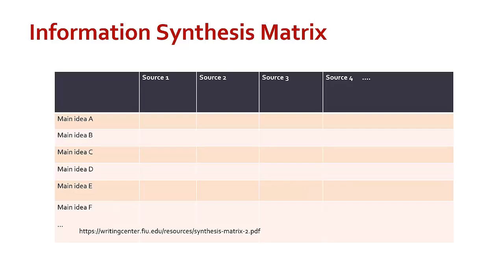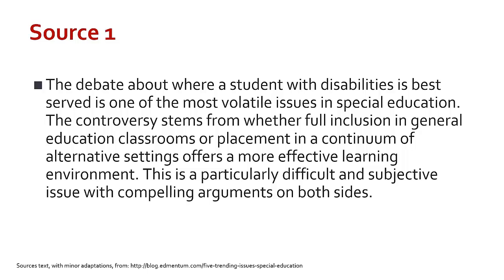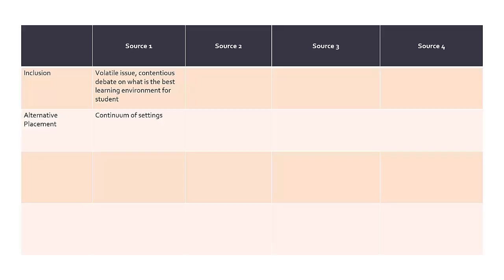Now let's make our own matrix together using four short sample sources. The topic of our research is education for students with disabilities. We start with a blank matrix which shows where the sources and main ideas will go. We are going to fill this out source by source. Let's begin with source 1. As we read through, we see inclusion and also alternative settings. We can then add those ideas to the main ideas column. Then in the cell where the column for the first source and the idea intersect, we can add more details about how the source talks about the idea. As we can see in our updated matrix, we have the two main ideas and brief summaries of how source 1 covers them.